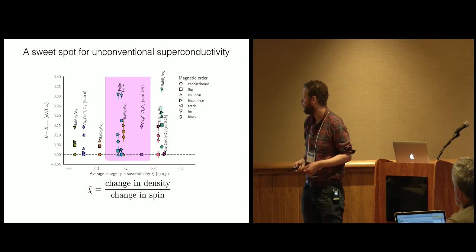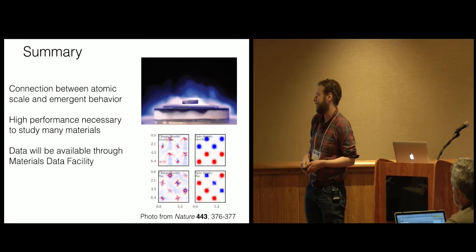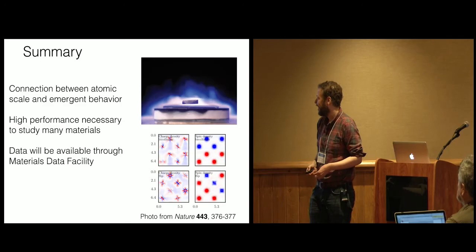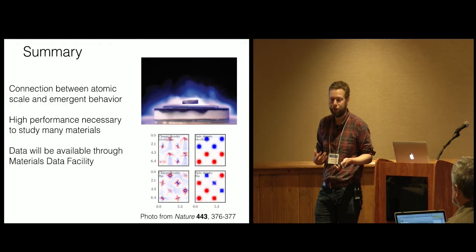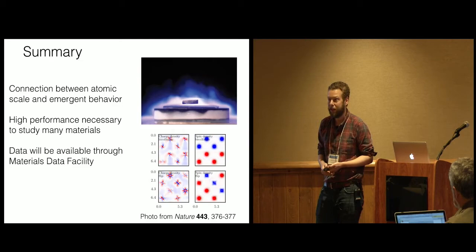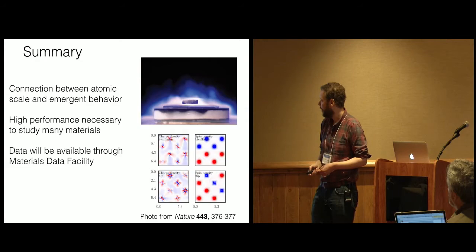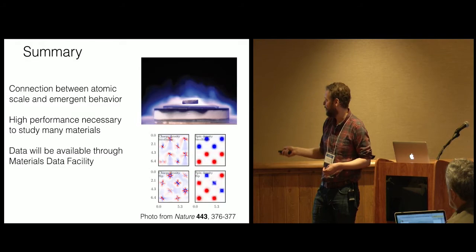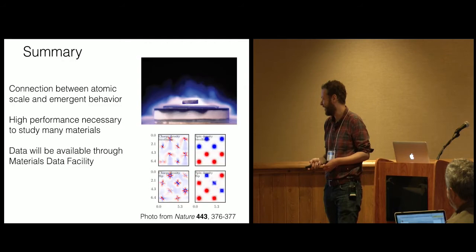So just to summarize, we were able to make a connection between some atomic scale and emergent behavior, which is really interesting behavior for us physicists at least. And the high performance is really necessary to study many materials. We wouldn't be able to address all these different materials if we couldn't use these big machines. We're actually making the data available through materials data facility and help within CSA. And so we expect that will be useful to people developing functionals and other things. This photo I wanted to mention was a photo saying that superconductivity research was dead. I mean, this is an article from Nature. It said superconductivity research is dead. I don't think that's true. But I wanted to use that photo for that reason.